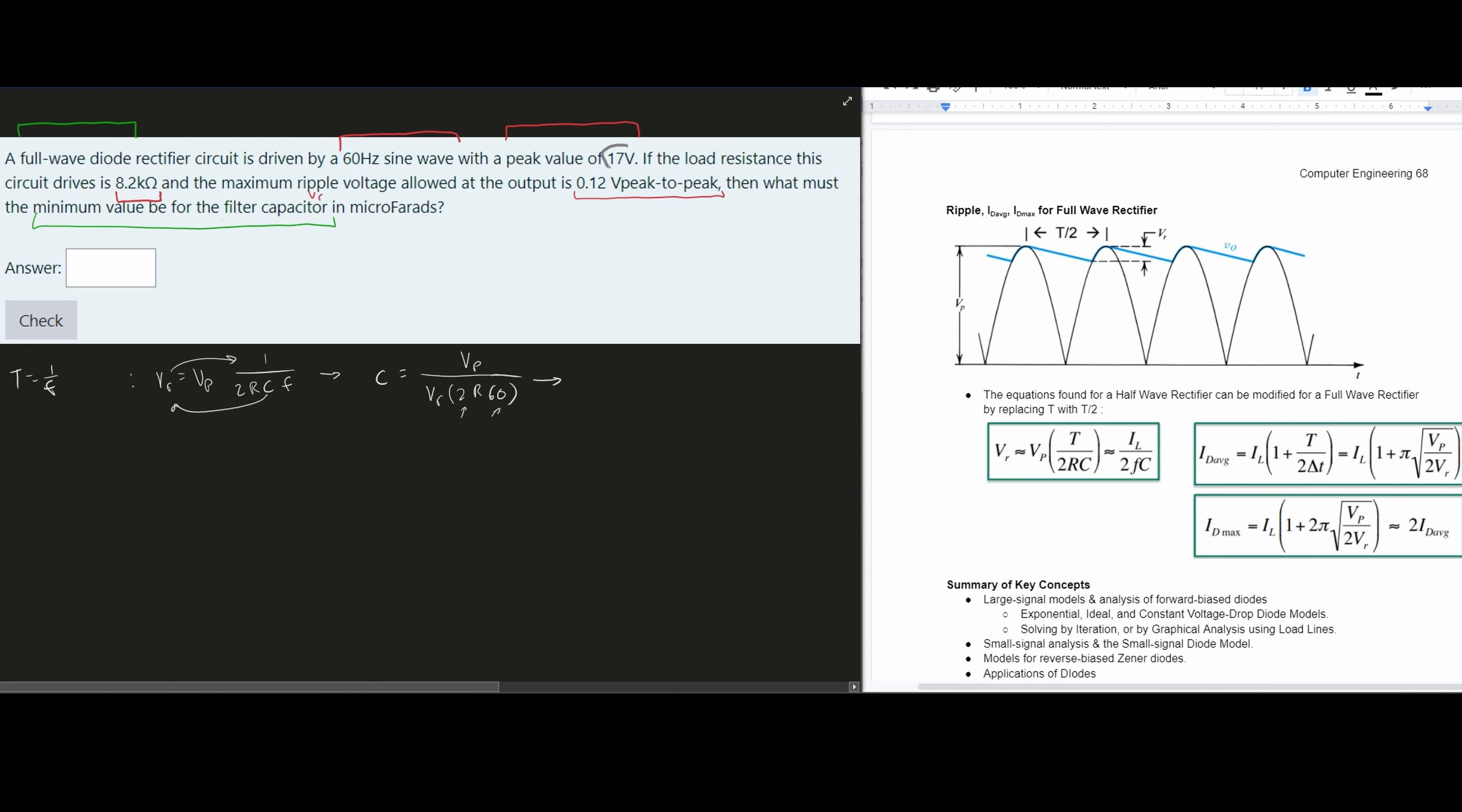Now we can look at our VR. Remember the ripple voltage is 0.12 volts peak-to-peak. So this is 0.12, and this is 17. Our resistance is the next thing we're going to look at - 8.2 kΩ. Inside of here, we're going to have 8.2 times 10³, because kilo is 10 to the third. This is going to give us a capacitance value of approximately 1.44 times 10⁻⁴. We're using this equation, modifying it, and plugging in our values after we looked at the problem carefully.